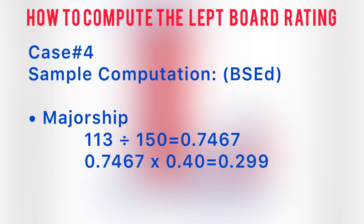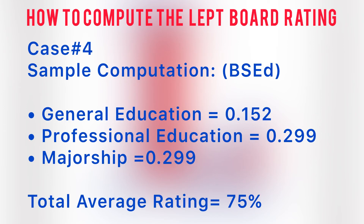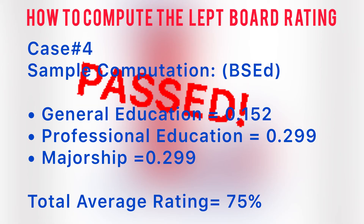Add all the computed ratings together: general education is 0.152, professional education is 0.299, and majorship is 0.299. The total is 0.75. Multiply this with 100 to get the percentage of 75. This BS ed taker passed.